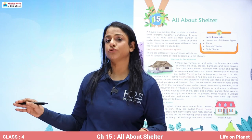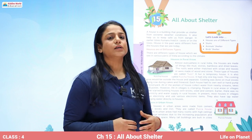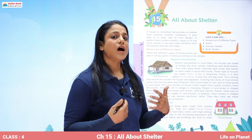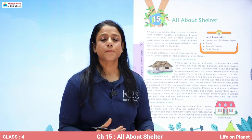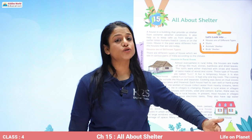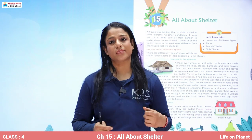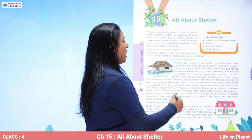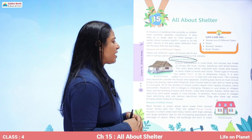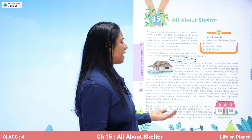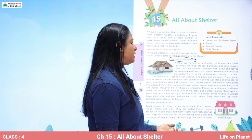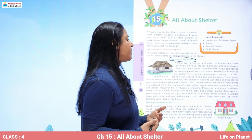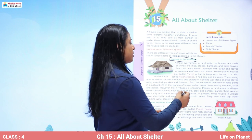Some areas are hilly regions, some are near to the sea, and some areas are plain. According to every climate, area, and season, there are different types of houses. It also depends upon the availability of the material according to which houses are built. In rural areas, houses are made of mud, stone, bamboos, and dried leaves. The roofs were either thatched with straw and leaves or made of wood and stone. This type of house is called a hut.